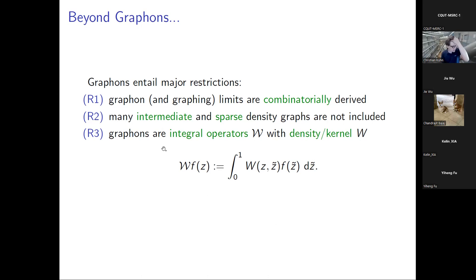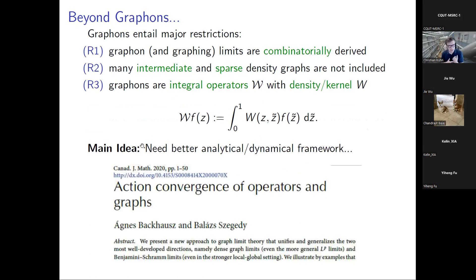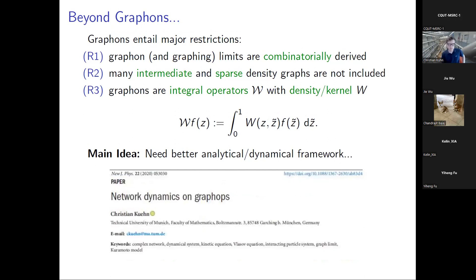Most neural networks will be reasonably sparse — or at least have very small weights — so you can't really hope to handle them with pure graphon kernels. Luckily, people in Hungary — Ágnes Backhausz and Balász Szegedy — wrote a paper where they proposed rewriting all of graph limit theory in a more analytical framework using operators and measures. They present a new approach unifying dense graph limits (graphons) and Benjamini-Schramm limits (sparse graphs), proposing a new framework called graph operators, or graphops.